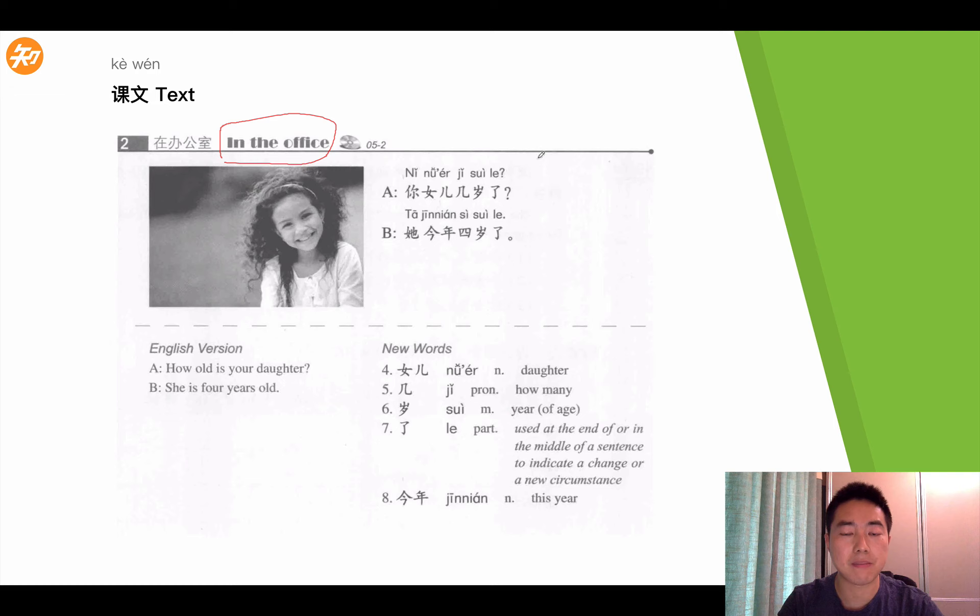So, A is asking B how old the daughter of B is, and B answered with the age. Okay, so first, let's take a look at what did A say here. A said, 你女儿几岁了? 你, we already learned in our previous lessons, means you, 女儿, daughter, 几, how many, 岁, years old? So, 了 is the particle here. So, together it should be how many, how old is your daughter? How old is your daughter? So, read after me one more time. 你女儿几岁了?